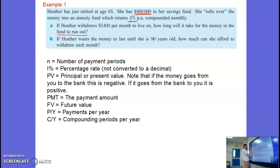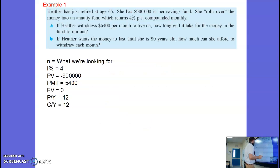Okay that's going to be a negative $900,000. The payment, $5,400. The future value, we want to know when it reaches zero. Payments per year is going to be monthly so that will be 12. Compounding periods, it's compounded monthly so that will also be 12. Let's just put that information there.